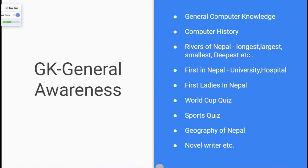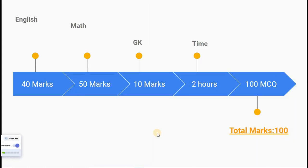Looking at the marks roadmap: English is 40, Mathematics is 50, GK is 10 marks — total 100 marks. The exam is 100 MCQ objective questions with a total time of 2 hours. English has 35 marks for grammar and 5 marks for reading comprehension, totalling 40 marks.